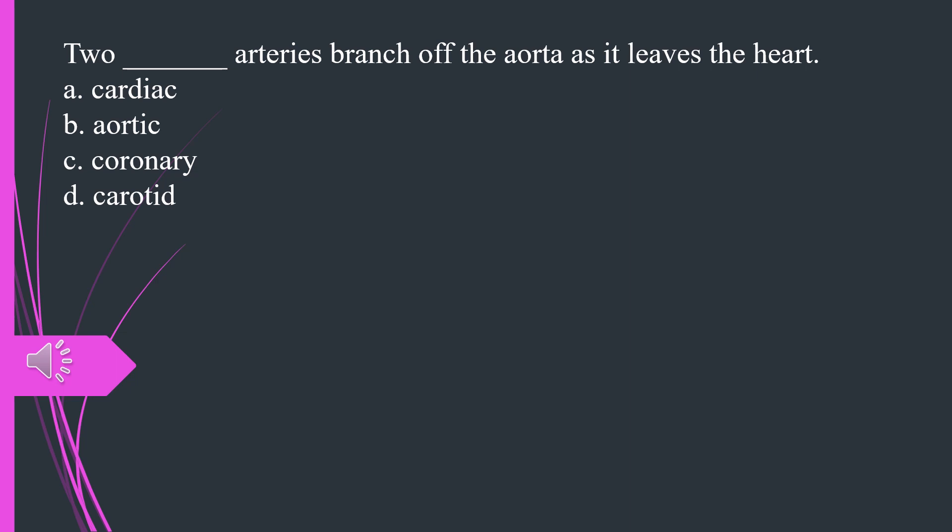What arteries branch off the aorta as it leaves the heart. A. Cardiac B. Aortic C. Coronary D. Carotid. The answer is C, coronary.